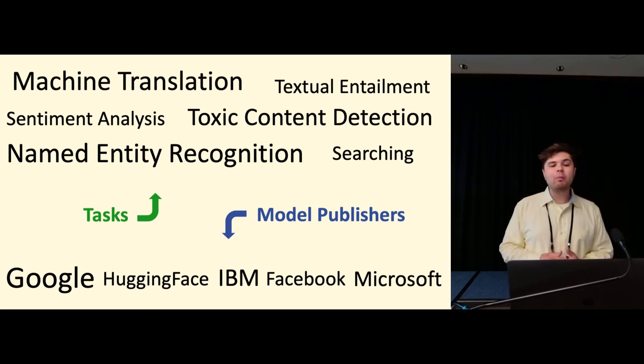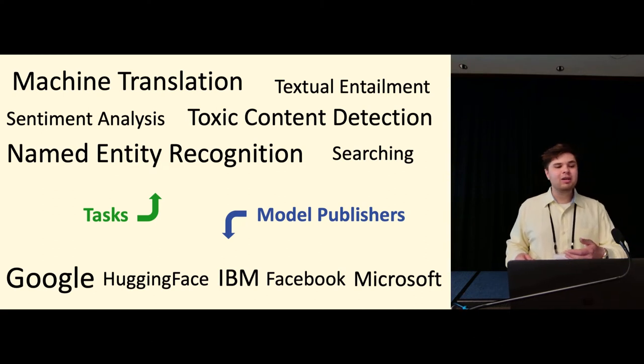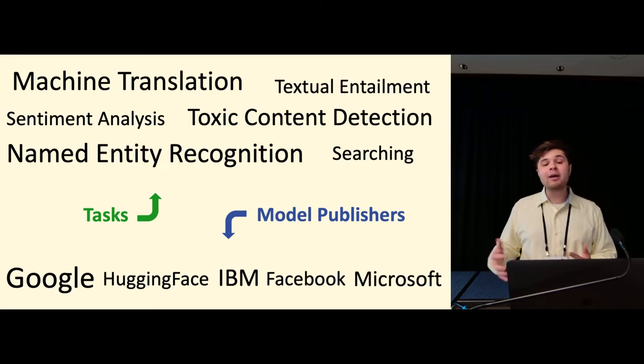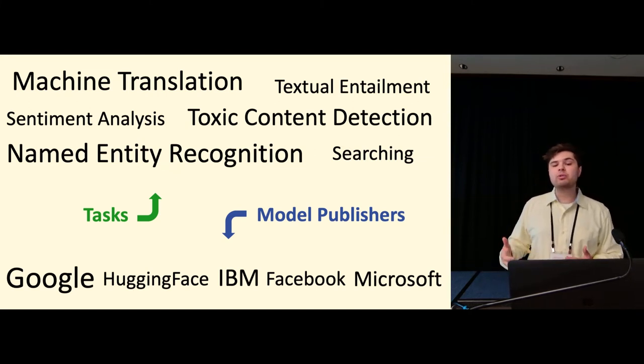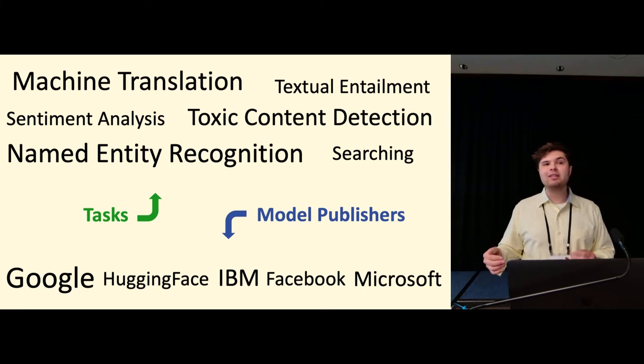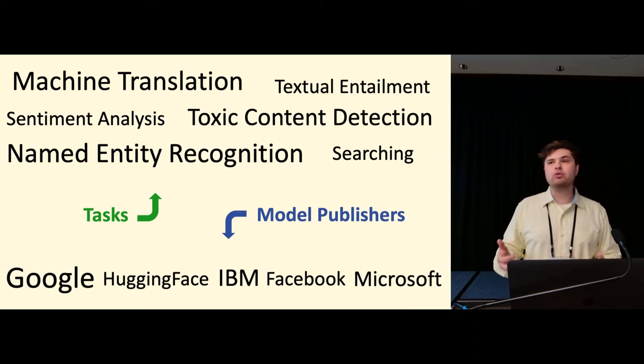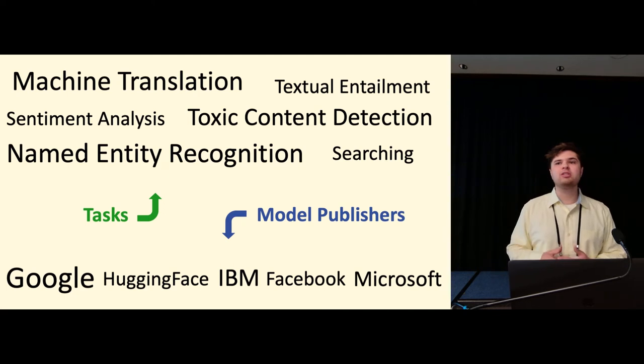And we actually looked at a whole bunch of different tasks in our experiments. We looked at machine translation, textual entailment, toxic content detection, a whole bunch of others. And we also looked at models from a variety of different large technology companies that are well-known producers and publishers of models online. Many of the models that we looked at are actively deployed production models, and we find that every model that we looked at was vulnerable to being able to generate adversarial examples using these kind of imperceptible perturbations that we are generating using Unicode.